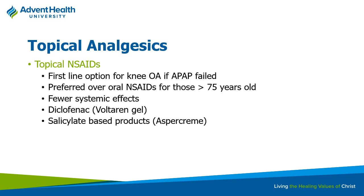Voltaren Gel works pretty quickly—it doesn't take as long as capsaicin, which requires depleting substance P. Voltaren can be used for minor aches and pains and works pretty well. There are also salicylate-based products like Aspercreme that are fine to use as well.